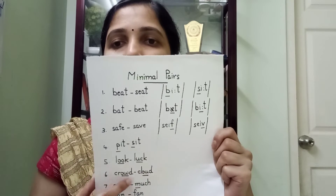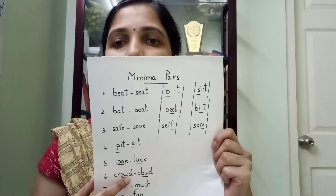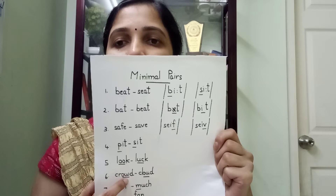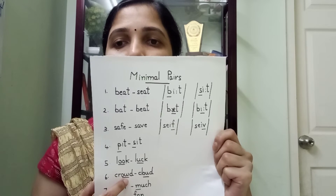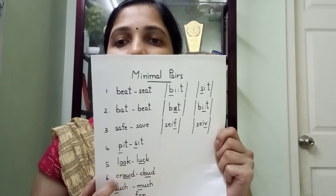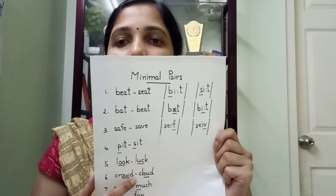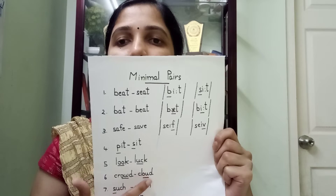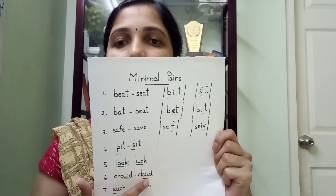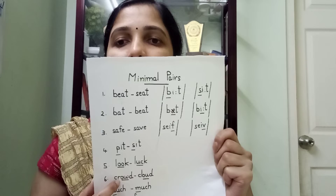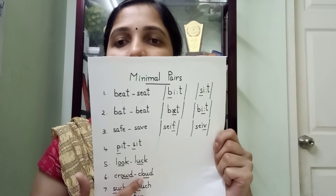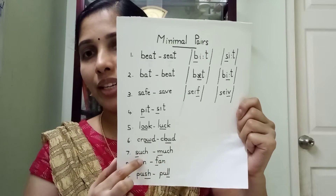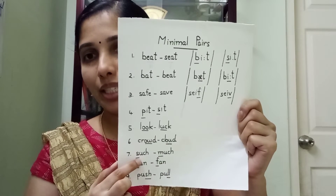Crowd and cloud — C-R-O-W-D and C-L-O-U-D — here /r/ and /l/ change. Such and much differ in the initial sounds /s/ and /m/. Van and fan differ in the initial sounds /v/ and /f/.